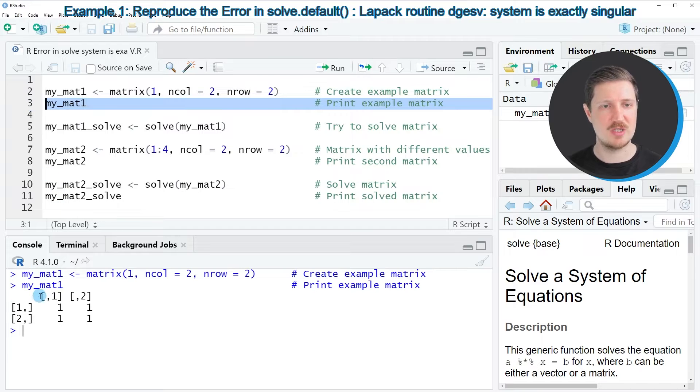If you run this line of code you can see at the bottom that our example matrix contains two rows and two columns. However, you can also see that all of the values in the data cells of this matrix are equal to the value 1.